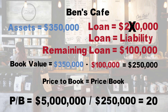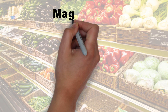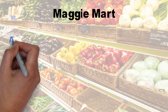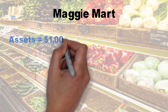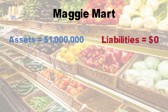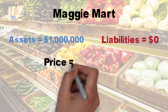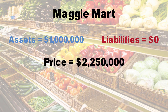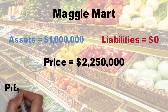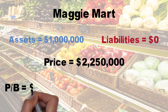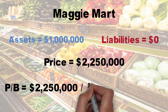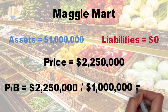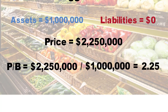Although price to book varies by industry, typically a price to book ratio of 20 is very high. Let's take a look at Maggie's grocery store. Her total assets are valued at $1 million and she has no liabilities. She offered you 10% of her company for $225,000, giving her company a $2.25 million valuation. $2,250,000 divided by $1 million gives us a price to book ratio of 2.25.